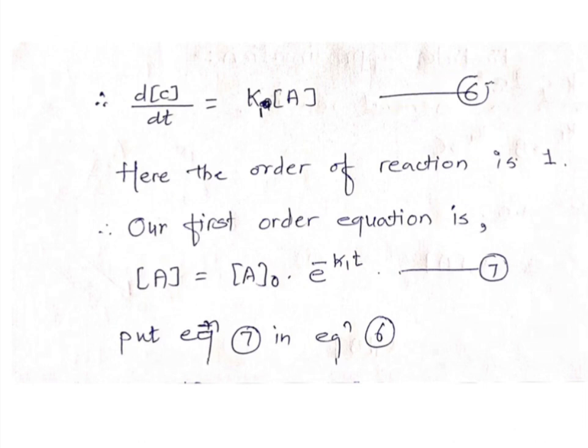From this equation we can see that the product formation is a first order reaction. That means A gives product C directly, the intermediate concentration is 0, and the reactant gives products — so the reaction is first order. The integrated equation of the first order reaction is: concentration of A equals concentration of A₀ times e raised to minus K1 times T. This is equation number 7.